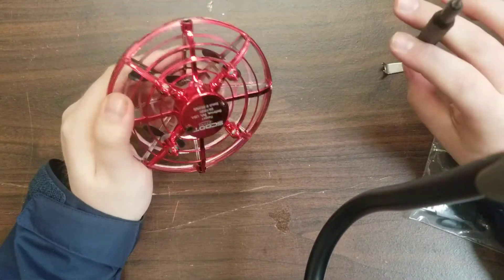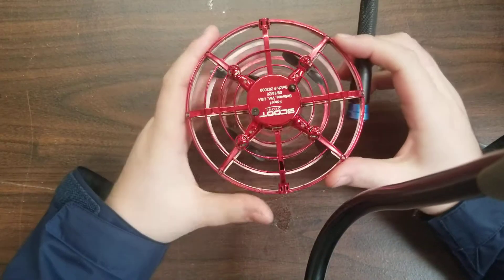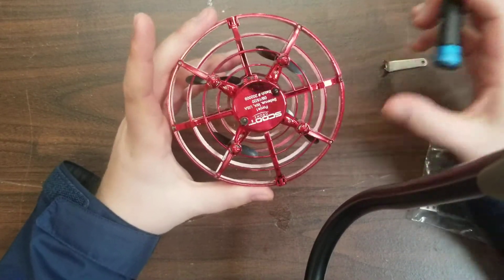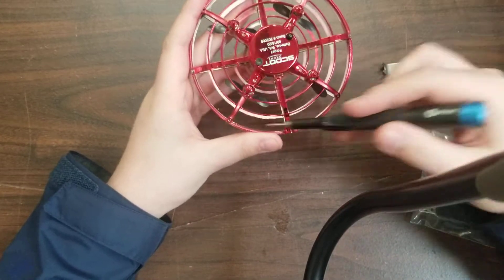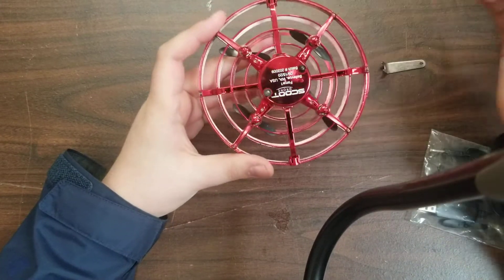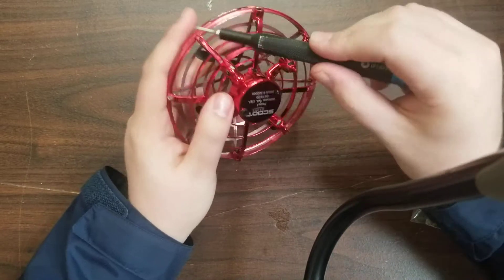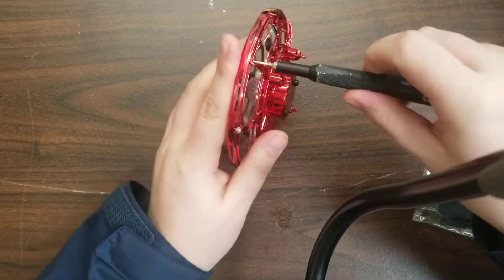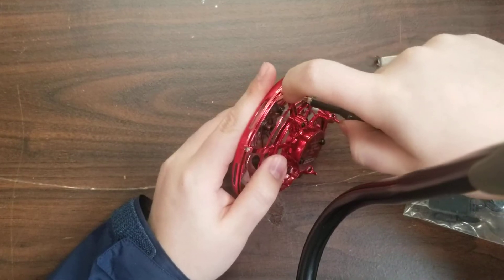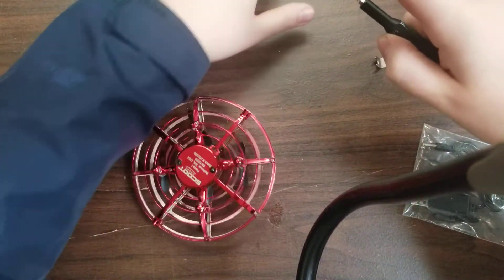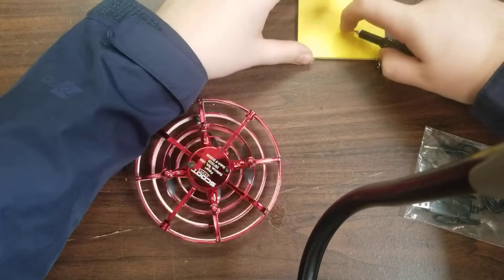So anyway, first step, we're going to take our Phillips head screwdriver, and we're going to remove four screws, and they're all located on the bottom of the Scoot. They're here, here, here, and here, kind of in a square pattern, so I'll just go ahead and remove them. Make sure you put them somewhere safe because they're not very large screws.